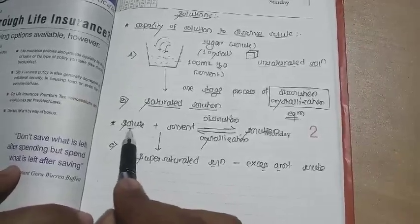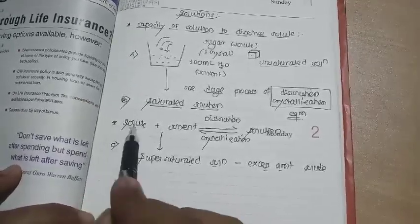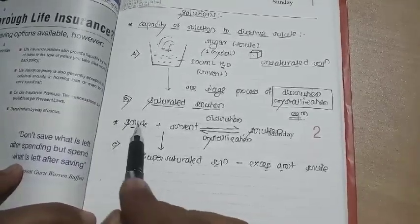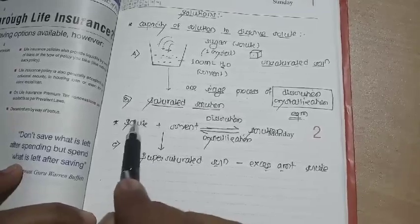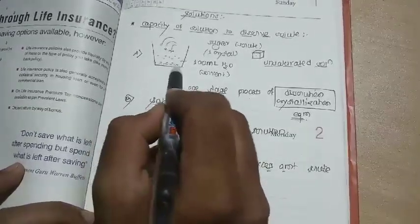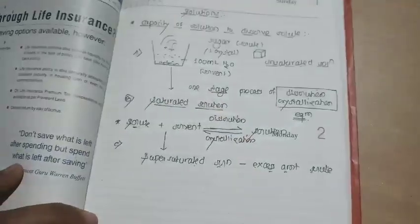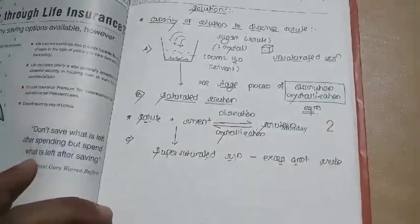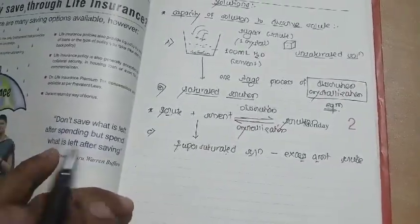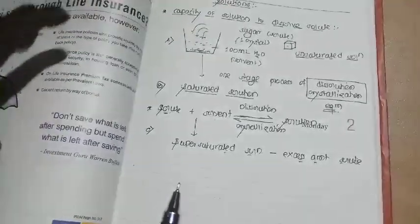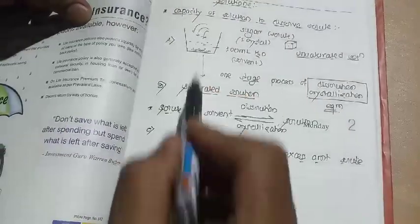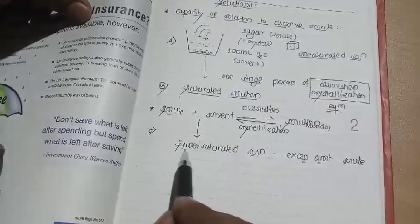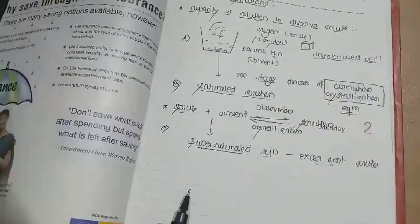When you add extra solute beyond the saturation point, the solute cannot dissolve further and settles at the bottom in the form of particles. These are the three cases: unsaturated solution, saturated solution, and super saturated solution.